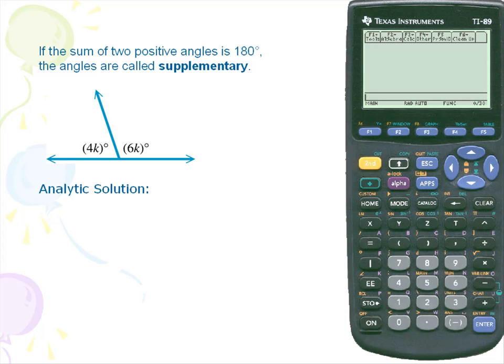Let's take a look at the analytic solution. From the diagram we see that we have 2 angles 4k plus 6k, the sum of whose angles are 180. So we'll set that up in the form of an equation.